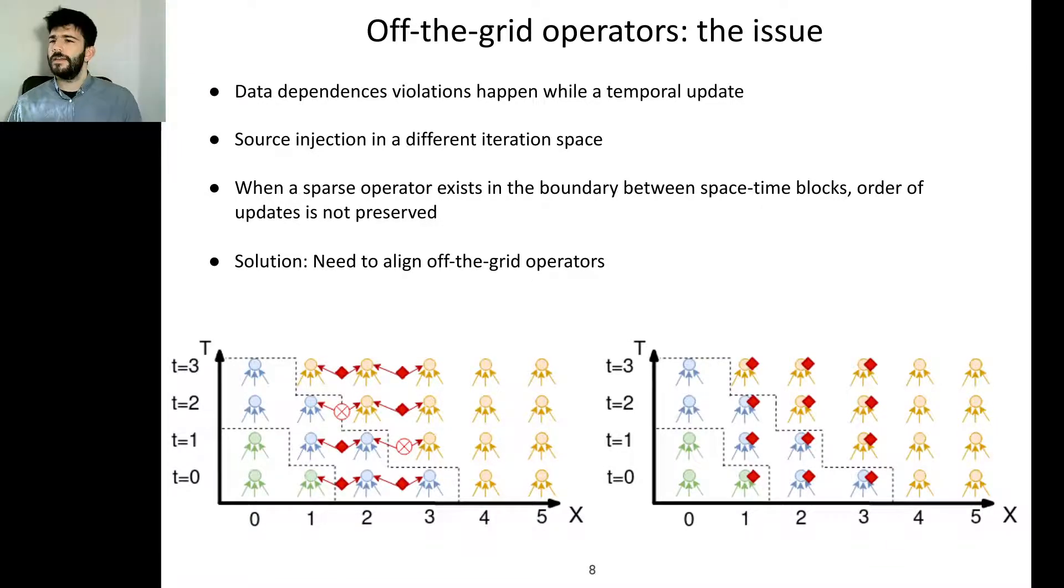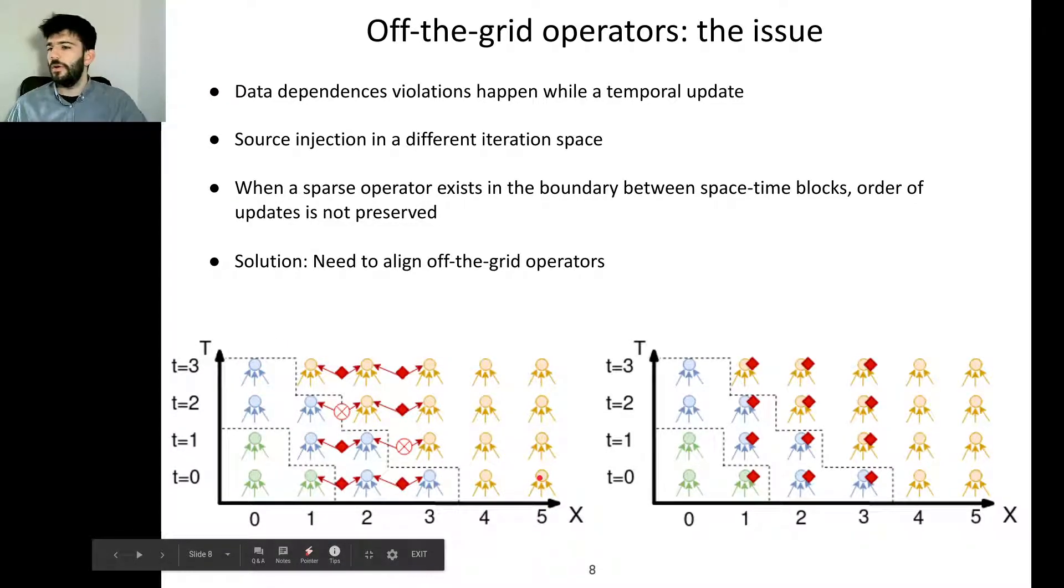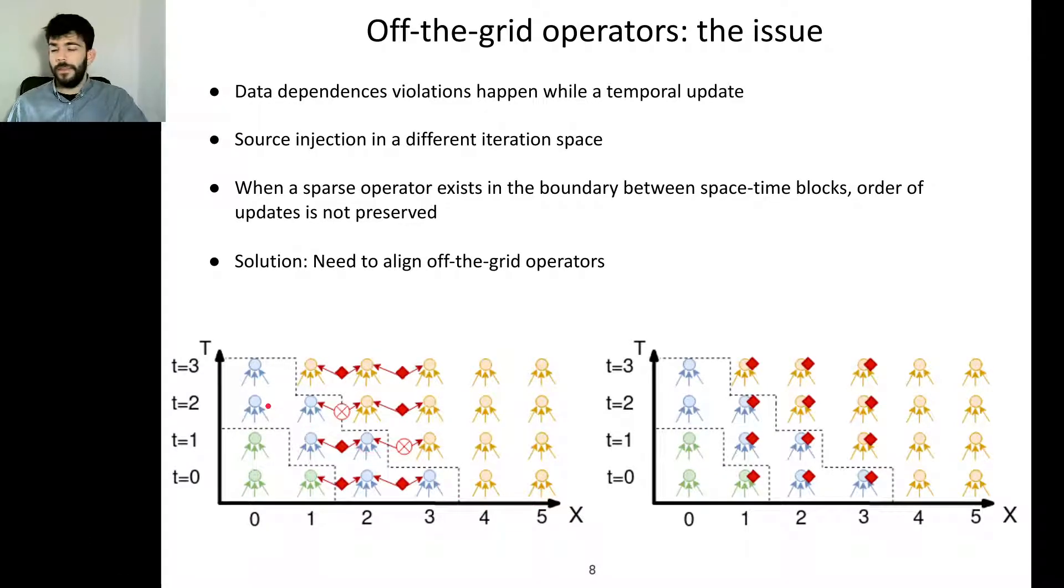What is the issue with sparse off-the-grid operators? The issue is that these data dependencies usually lead to violations when a temporal update is happening because there is a different iteration space not aligned with the grid iteration space. When the sparse operator exists in the boundary between space and time blocks, the order of updates is usually not preserved. We cannot easily decide whether a sparse off-the-grid operator should be executed in the blue wave or the orange wave of temporal updates. If you execute it while the blue wave is on then you may miss an injection, but if you execute it in the future you will be missing an injection in previous computations in time.